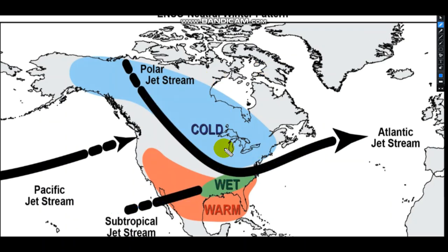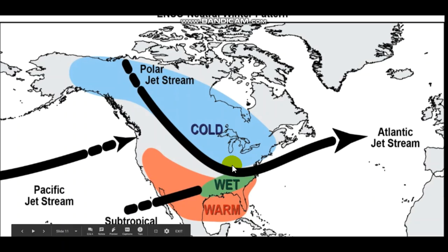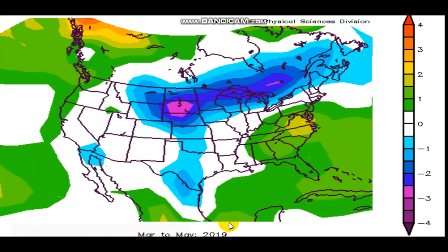In a La Niña pattern — which was considered early in the forecast period — the jet stream would shift into more of a zonal flow, perhaps slightly further south and west. At this point La Niña seems fairly minimal in likelihood, and that's one of the key differences from the previous forecast.